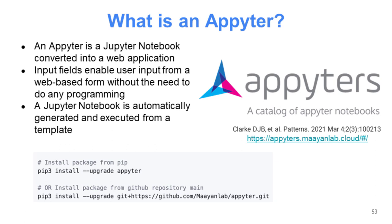So biologists come in with their data, they load it into the Appyter, and then they press submit, and then they get a report with analysis of their data. In order to do this, we created this software package called Appyter. What you need to do is take your notebook and specify within it some global variables that, when you compile that notebook, will build a website for you.